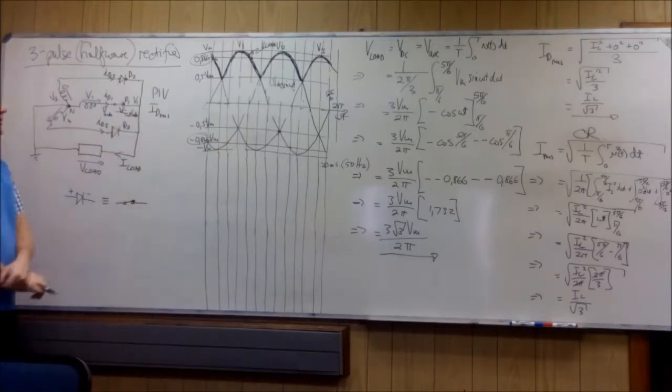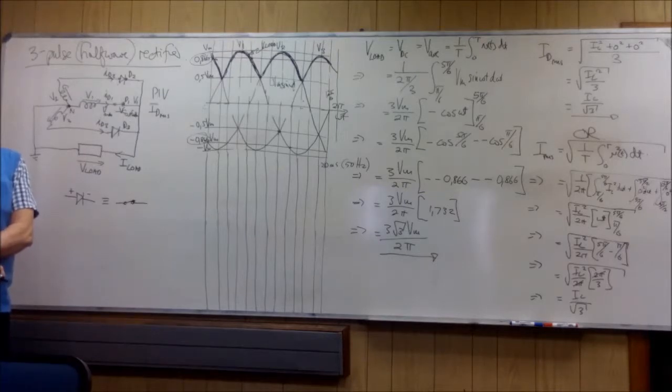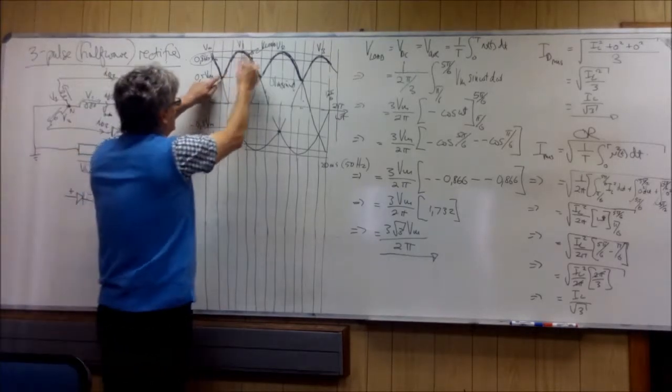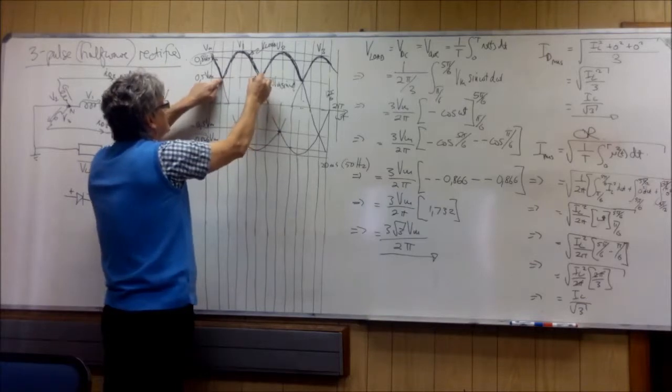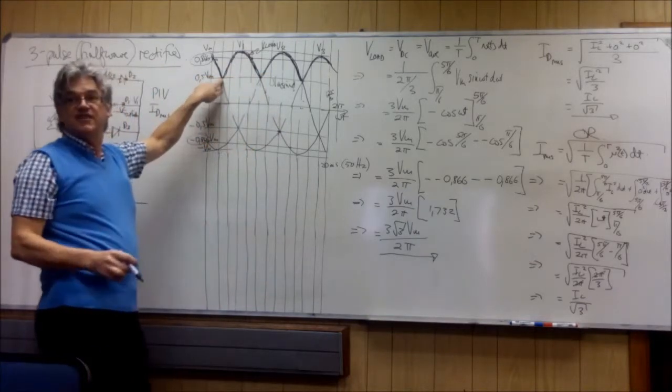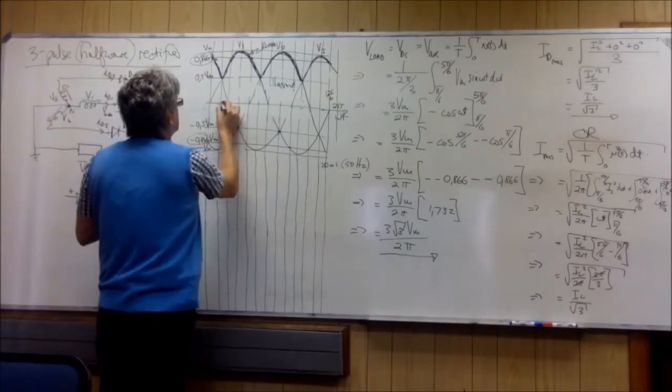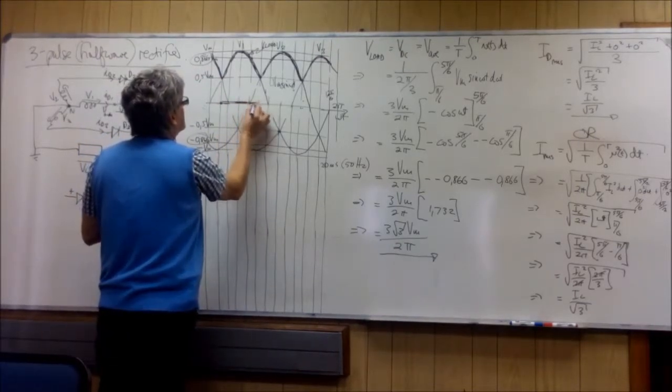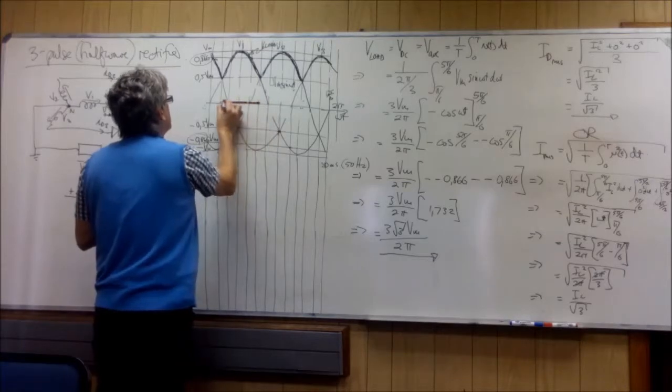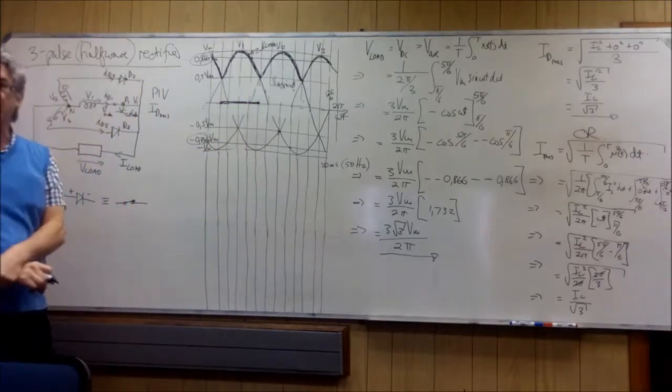So V1 minus V1 for this period here, from there to there, will give us zero. Do you agree? So from there to there, if it's zero, are you happy?